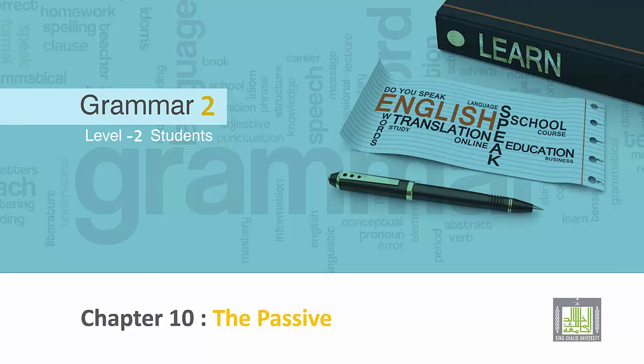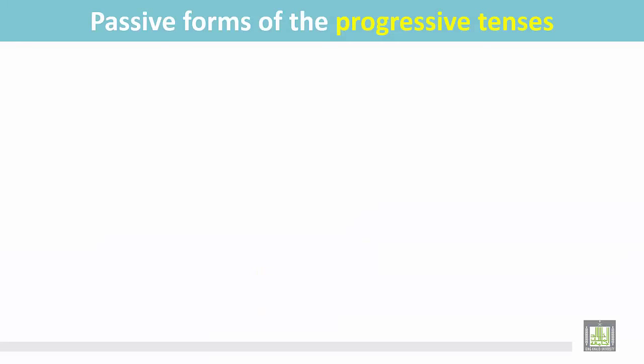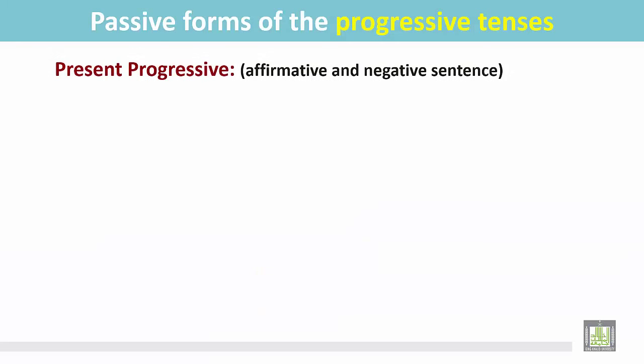Grammar 2 for level 2 students. Chapter 10: The Passive. Passive forms of the progressive tenses. Present progressive — affirmative and negative sentence.